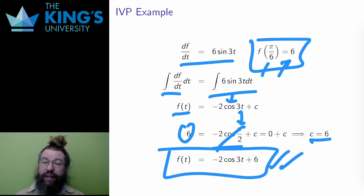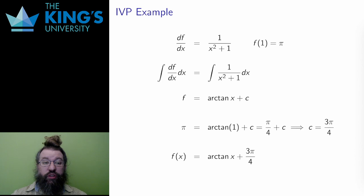Here is one last example. This is a differential equation which can be directly integrated, again because the right is just a function of x. It has initial value f of 1 equals pi. I integrate both sides.